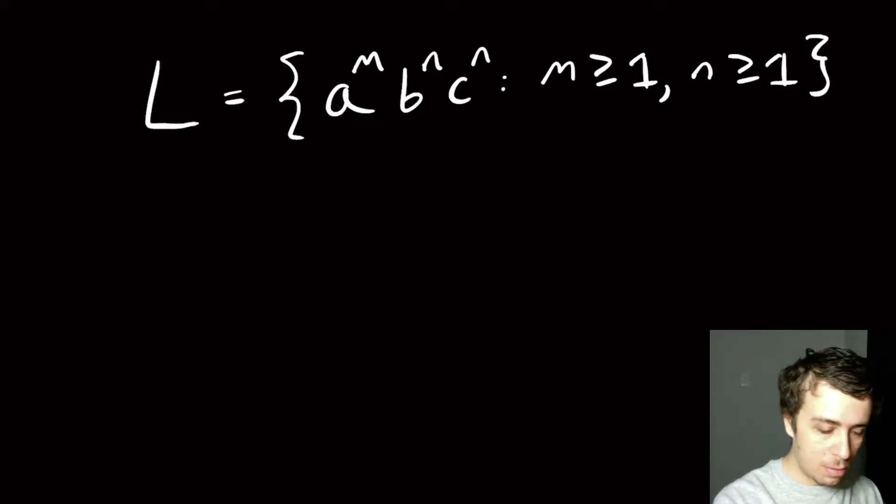Hi, so I want to talk to you about a really interesting problem that I found right here. So here's the language L, which is a to the n, b to the n, c to the n, where m and n are not related necessarily, but m is just something at least one and n is at least one.